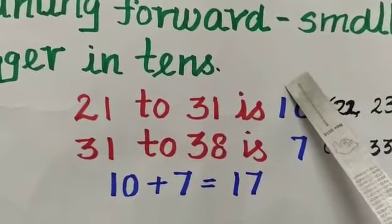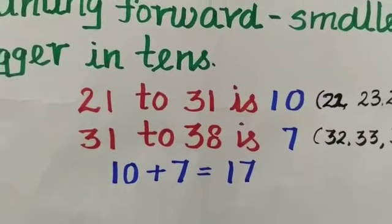Now let us add these two answers. 10 plus 7 we will get 17.